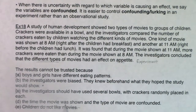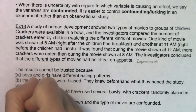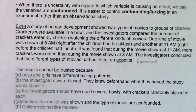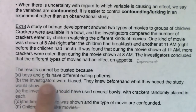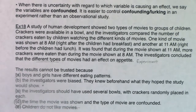Option D: the time the movie was shown and the type of movie are confounded. Winner! That is definitely the strongest reason the results can't be trusted. I might be suspicious of investigator bias, but I know for sure this is true — the time the movie was shown and the type of movie are confounded. It's a terribly designed experiment.